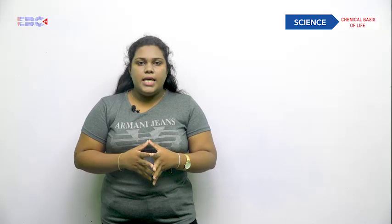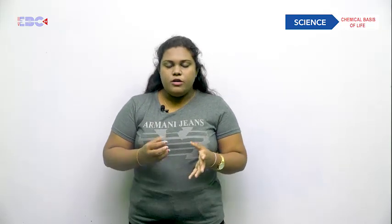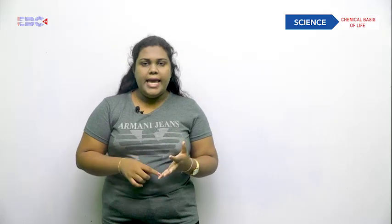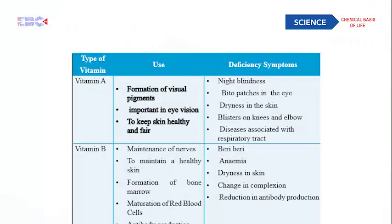As you know, vitamins are also important in biochemical reactions. Vitamins are of two types: water soluble and water insoluble. The vitamins which are water soluble are vitamin B and C. Vitamins insoluble in water are vitamins A, D, E, and K. The following table shows the uses of vitamins and their deficiency syndromes.